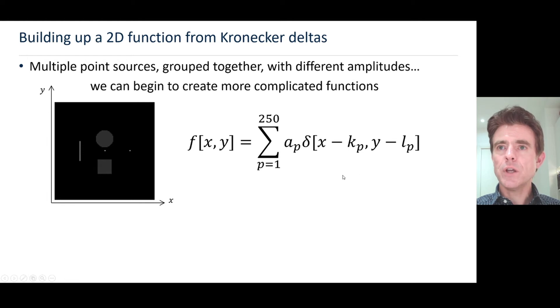All I do is have my point source delta function, delta(x,y), shifted to each point source location kp, lp with its own unique amplitude ap. I just do that for all of the points, all of the pixels that make up that image. Really you can think of these delta functions as pixels with particular scalings.